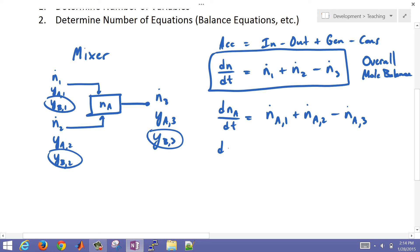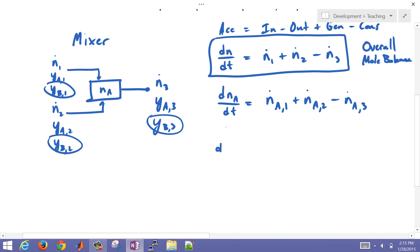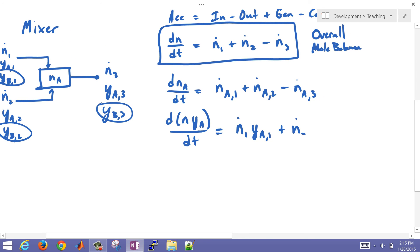And so if I have d(N times Y_A)/dt, now if number of moles are constant, sometimes we can just bring that outside the differential. But if not, then we need to do the chain rule on that. So if I have d(N times Y_A)/dt equals, and then I'll put n_dot_1 times Y_A1, plus n_dot_2 times Y_A2, and then this is going to be a minus sign, minus n_dot_3 times Y_A coming out in stream three. So those are mole fractions, and I could similarly write an equation for b as well.